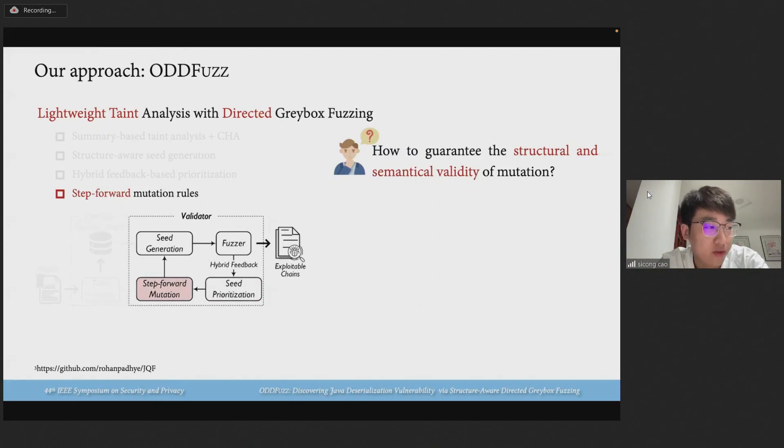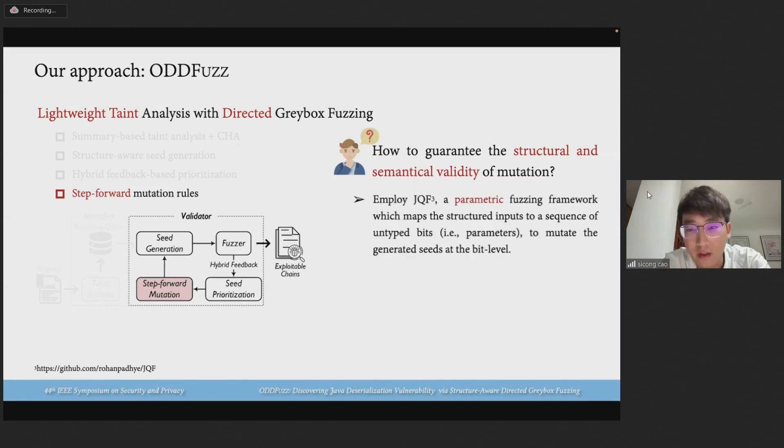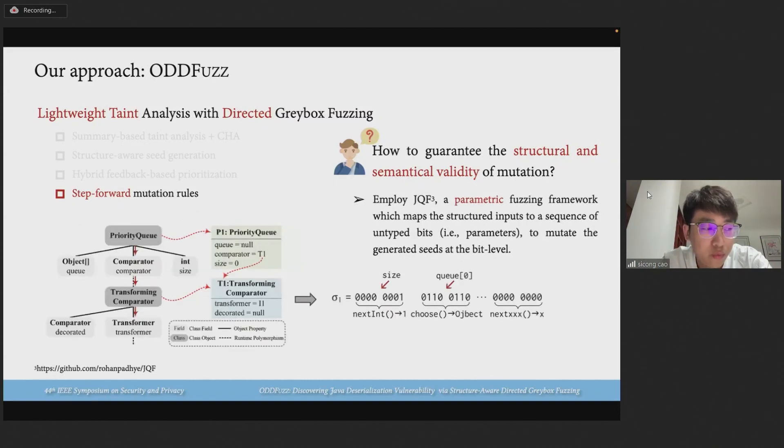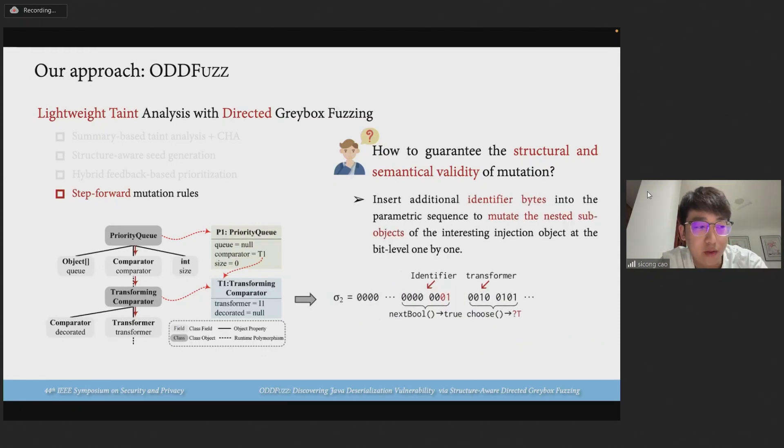We propose a step-forward strategy which leverages a parametric fuzzing framework to map the structured inputs to a sequence of untapped bits to mutate the generated seeds at the bit level while ensuring the structure remains syntactically valid. For example, to mutate the int variable size, the fuzzer invokes the method random next int to generate a random integer. To generate an object PriorityQueue, the fuzzer invokes the method to assign it a distinct object from the predefined dictionary.